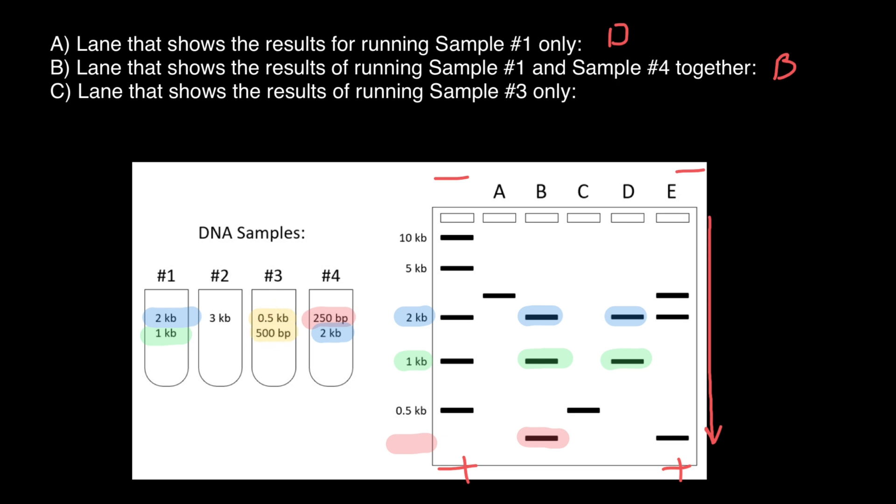First, we have to find the 0.5 kilobase band on the reference ladder. This is going to be this one. We see that this is the only variant we can choose from, variant C. That gives us only one band of the size 0.5 kilobases. So let's put it here. And this is all for today. Subscribe and see you in the next video. Goodbye.